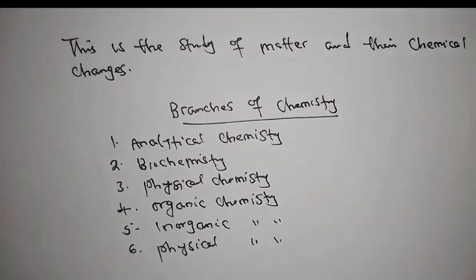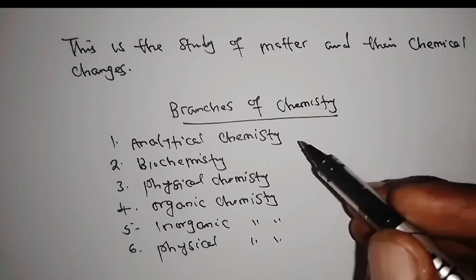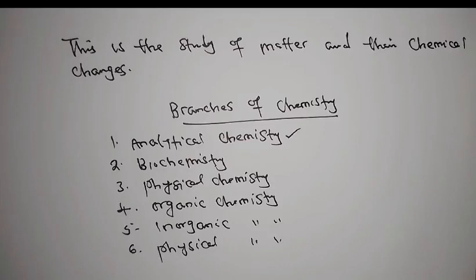As a student of chemistry, you must be able to understand what are some of the branches of chemistry. When we look at analytical chemistry, this is the chemistry that normally analyzes the composition and also the quantification of chemical substances and compounds. It involves methods and techniques to analyze samples in order to determine their chemical composition, structures, and properties.